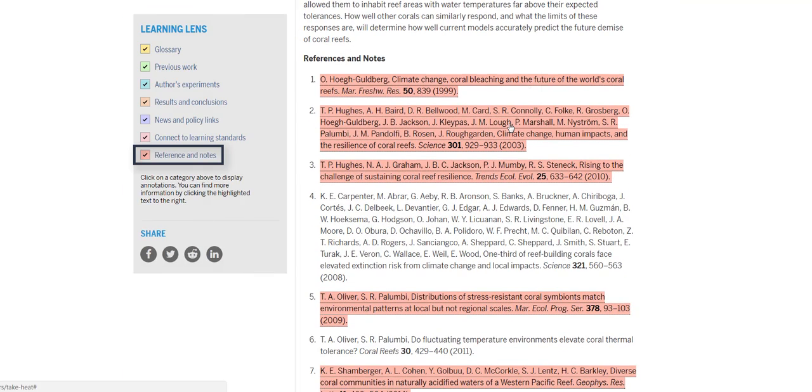I do want to highlight the references and notes learning lens with annotations found at the bottom of the page. This is an annotated reference section, meaning that the lens highlights key papers and the body of work supporting the current research.